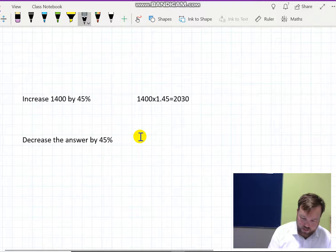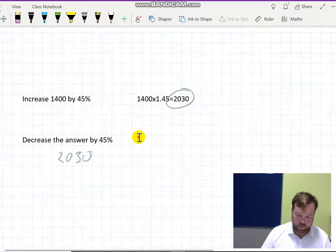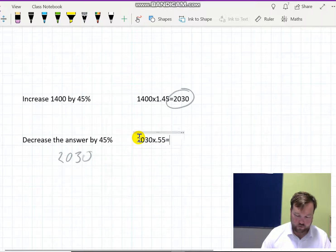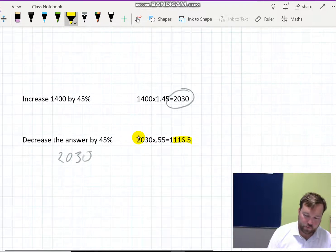It increased by 45%, and then we take the answer. So if this is the answer, that 2030, we decrease that by 45%, meaning we're taking 2030, multiplying it by 0.55, which is this. And we're ending up back lower than we did originally.